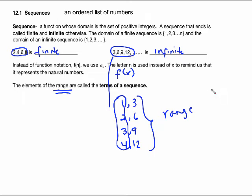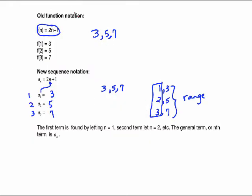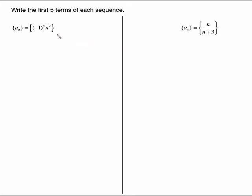A lot of the stuff we do with sequences is pretty easy — it's just that the notation can look kind of funny. The first term is found by letting n equal 1, the second term by letting n equal 2, and the general term or nth term is a sub n. You will be asked to write the first five terms of different sequences where you are given a formula, meaning you'll look for a sub 1, a sub 2, a sub 3, a sub 4, and a sub 5.